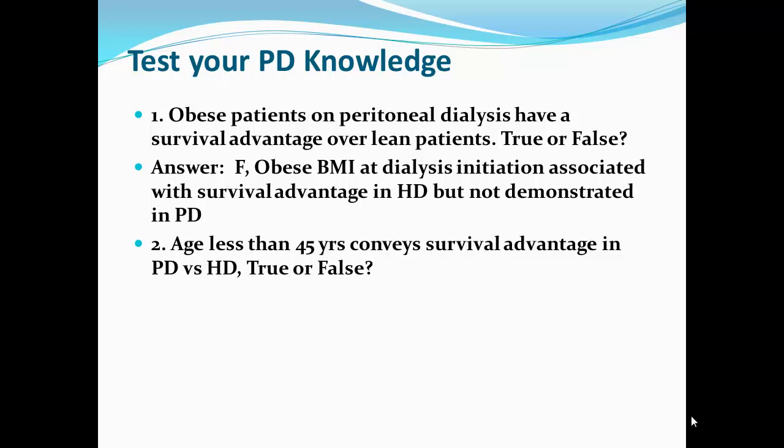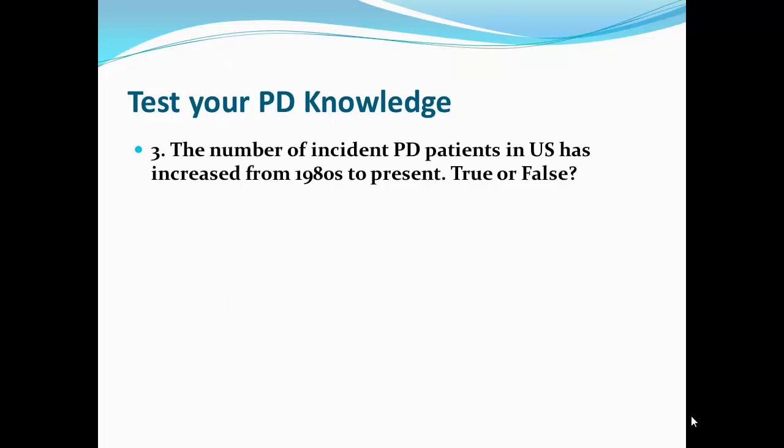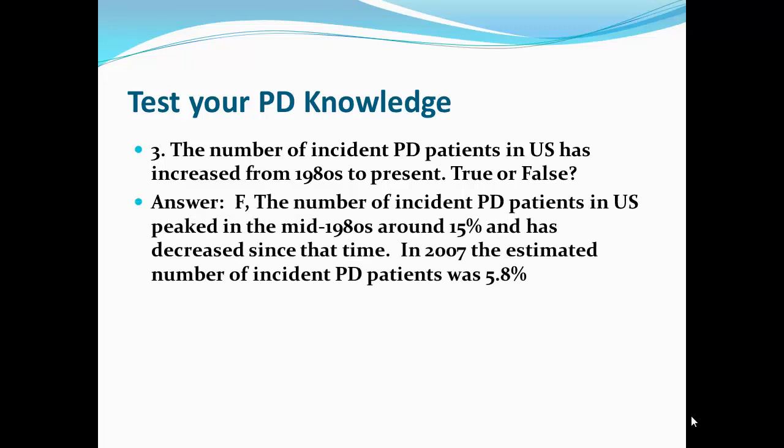Age less than 45 conveys a survival advantage in peritoneal versus hemodialysis — true or false? This is actually true. There are several solid observational studies that seem to show that younger patients under the age of 45 may have some survival advantage. Conversely, patients over the age of 65 in most studies have been found to have a little bit higher mortality compared to hemodialysis patients, especially those who are diabetics.